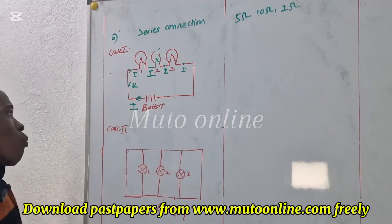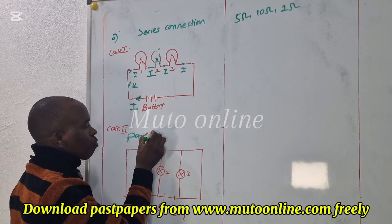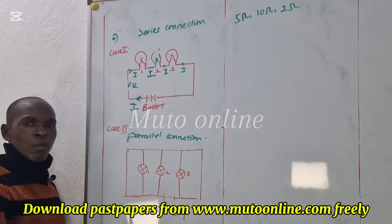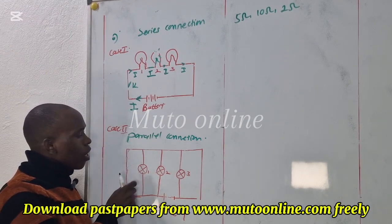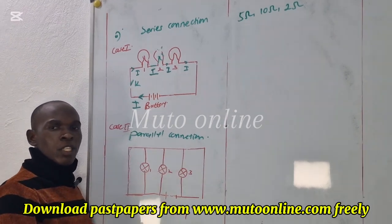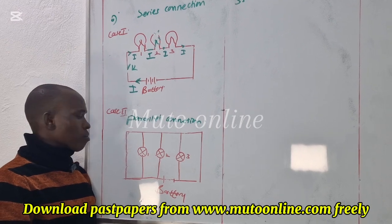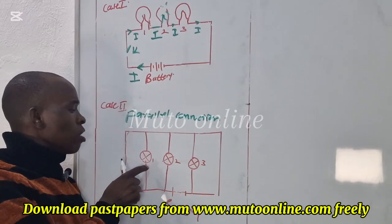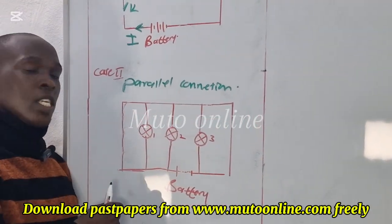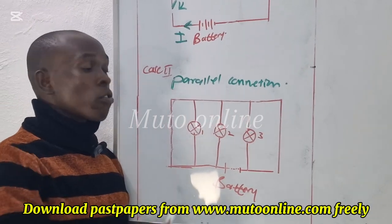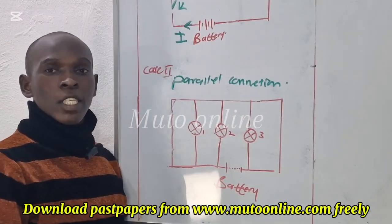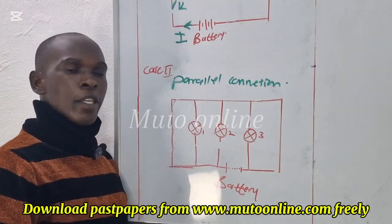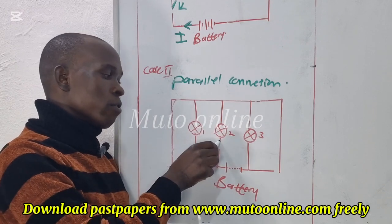Let us go to case 2 — parallel connection. When you look at this parallel connection, it is arranged in a different format. We get three bulbs and connect them in that form. The good thing with this arrangement is that if bulb A or bulb 1 gets a problem, it will not affect bulb 2 and bulb 3 — they will continue to give light because they are not tampered with.